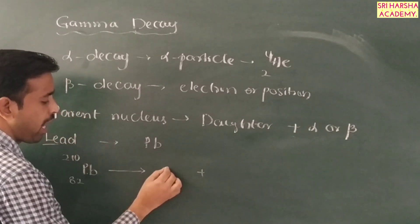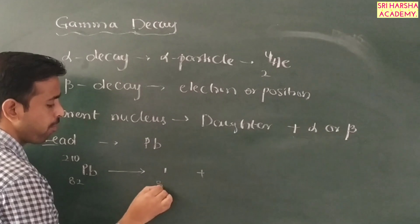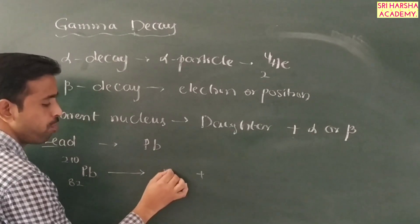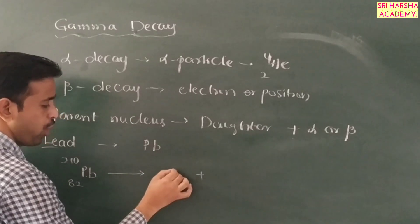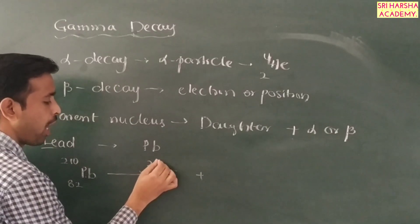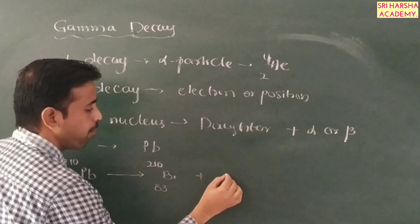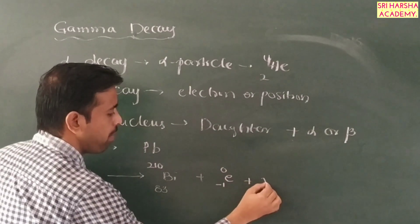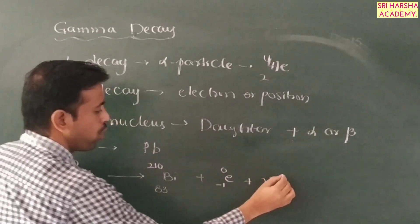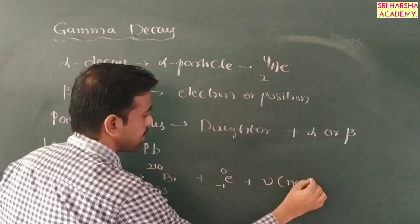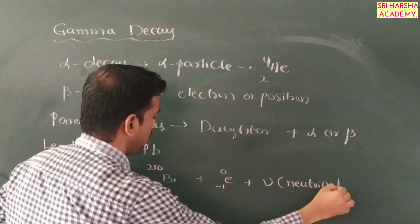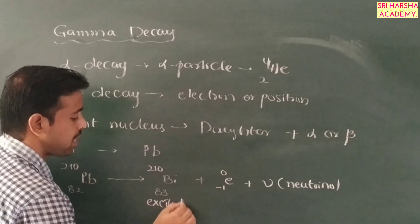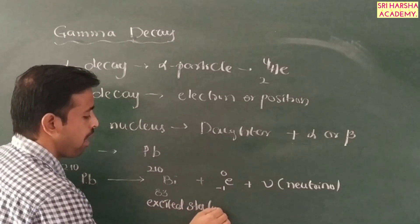This radioactive element emits a beta particle, which increases the atomic number to 83. The element with atomic number 83 is called bismuth. The atomic mass remains 210. The beta particle is an electron, and a neutrino particle is also emitted along with it.